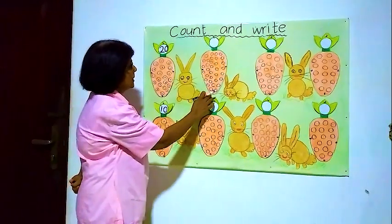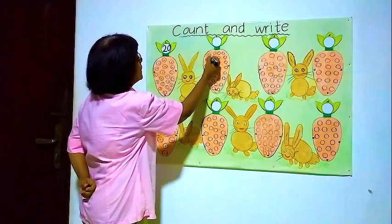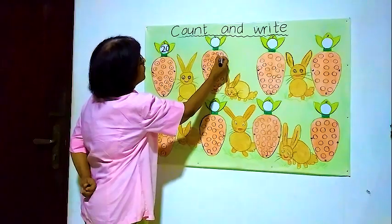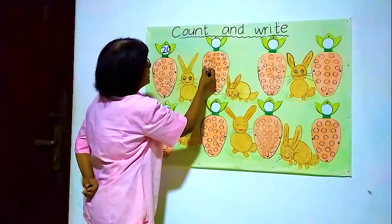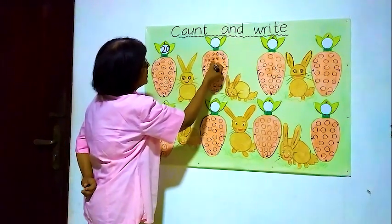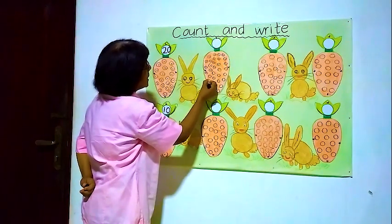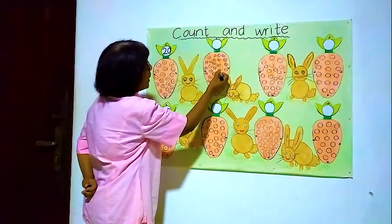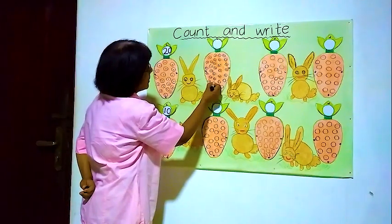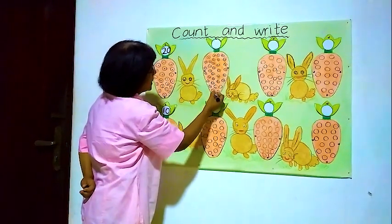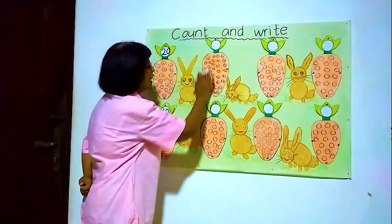Now we will go to the next one here. Another carrot — lot of balls. We will count from here. 1, 2, 3, 4, 5, 6, 7, 8, 9, 10, 11, 12, 13, 14, 15, 16, 17, 18, 19, 20, 21, 22, 23, 24, 25, 26, 27, 28, 29, 30, 31, 32, 33. There are 33 balls inside this carrot.